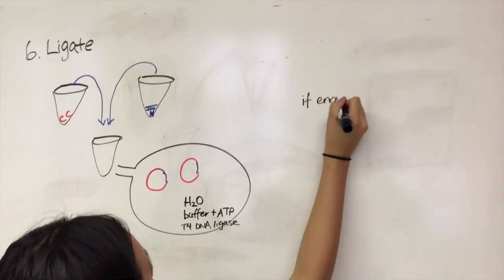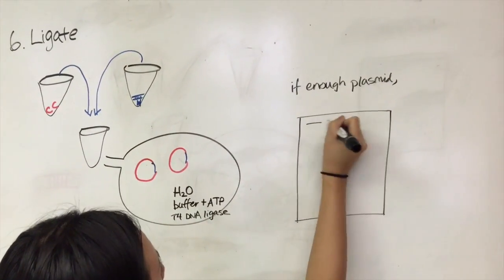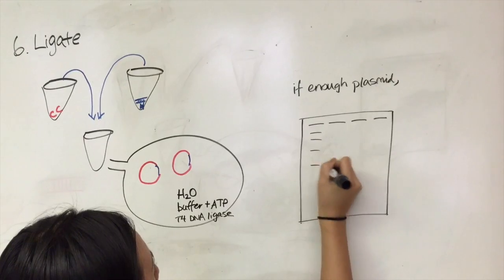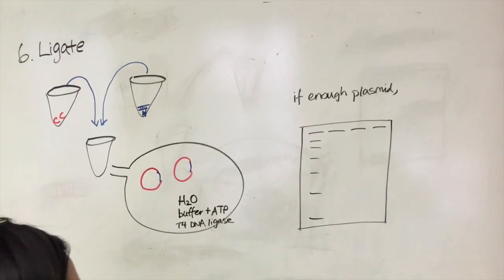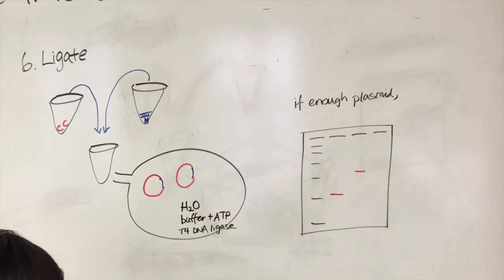After ligation, check to see if the gene was successfully inserted by running the ligation product on a gel, with the negative control being the initial target plasmid before undergoing ligation. If the ligation product is longer than the original plasmid length, it can be inferred that ligation was successful.